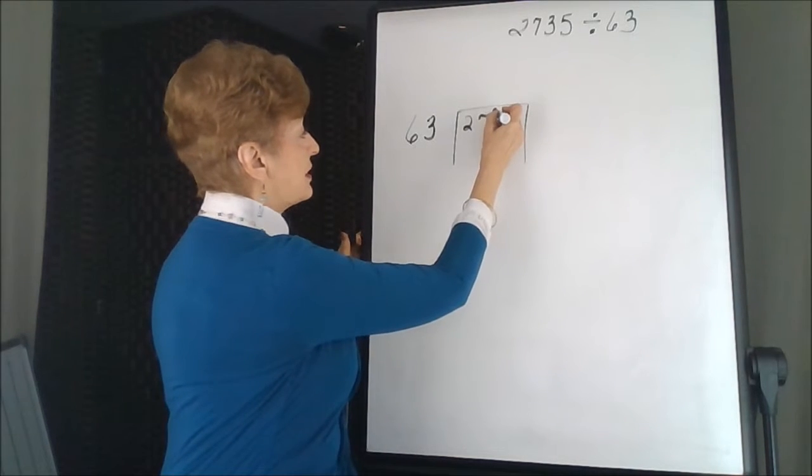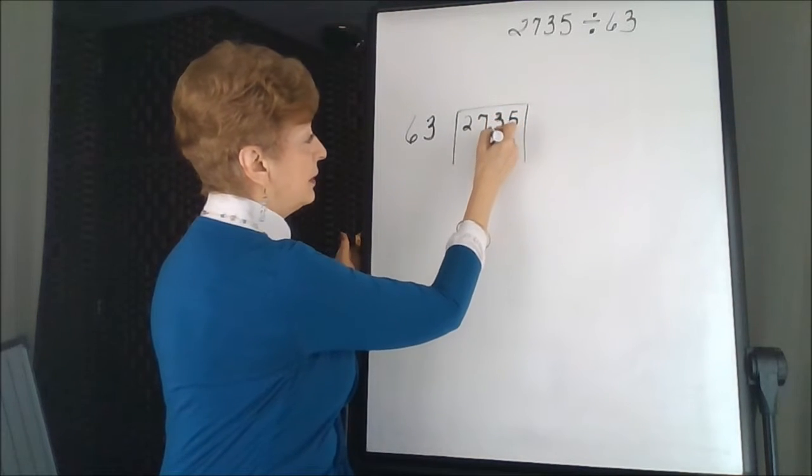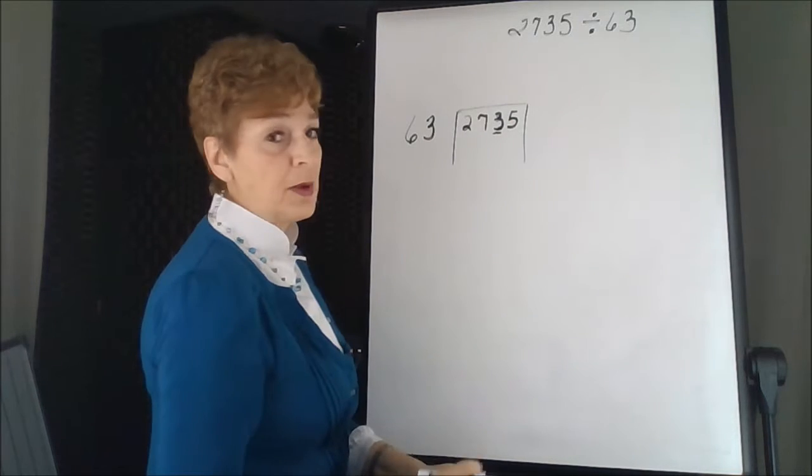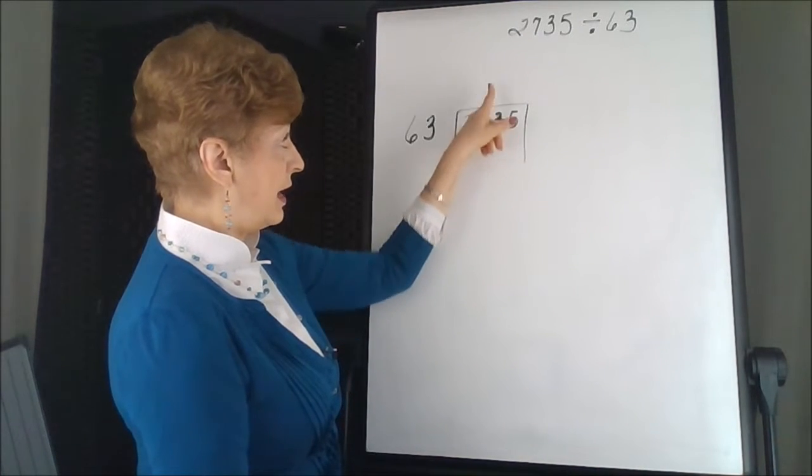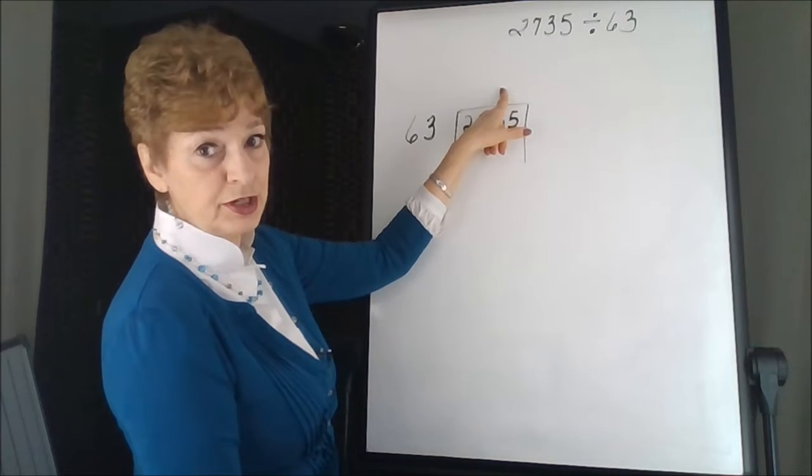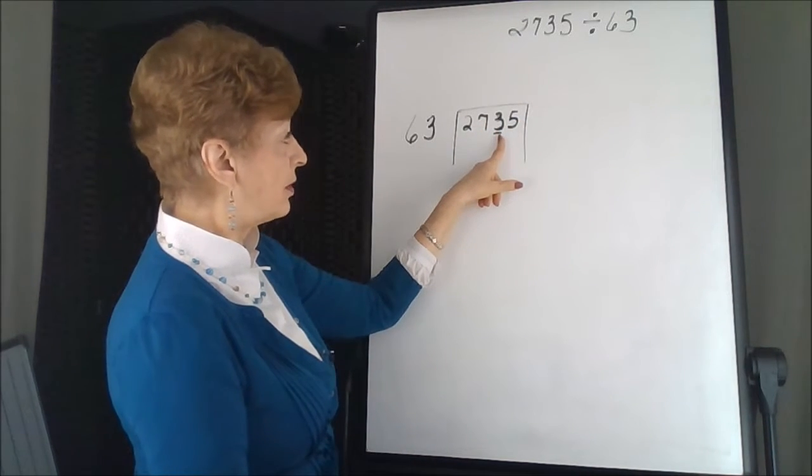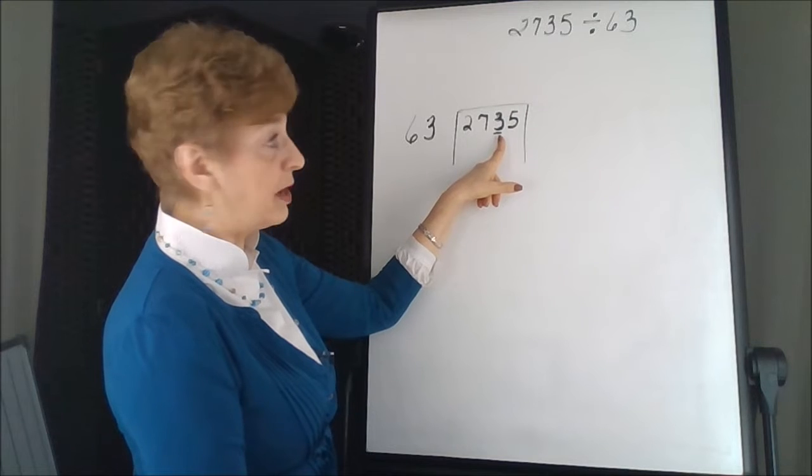So, the 3, I'm just going to darken the 3 or put a little line under it so I remember that when I choose an answer, a partial quotient, it's going to go above the darkened number, or the slightly underlined number.